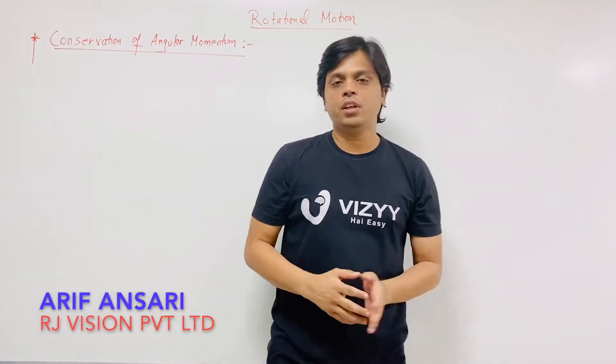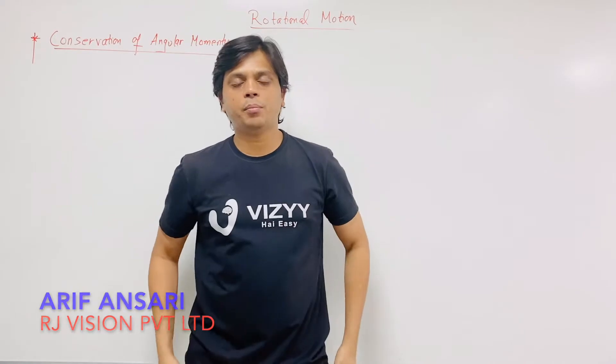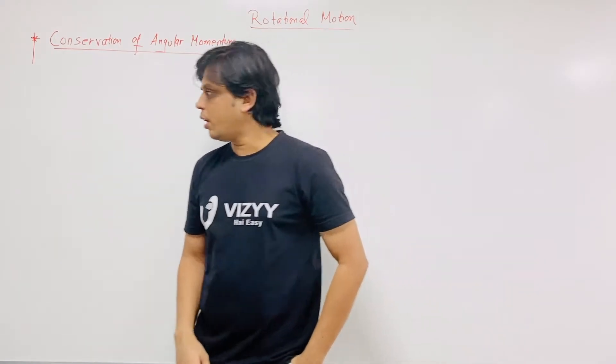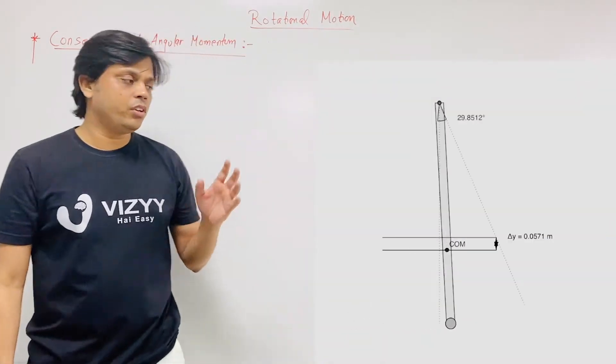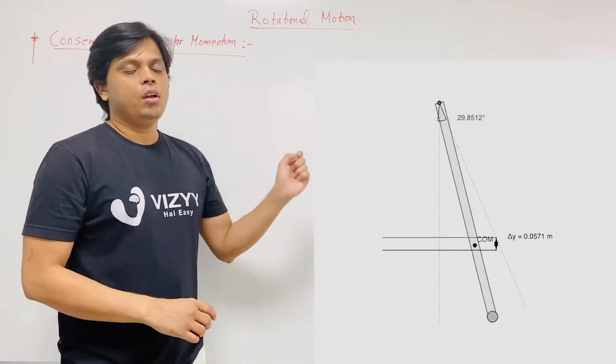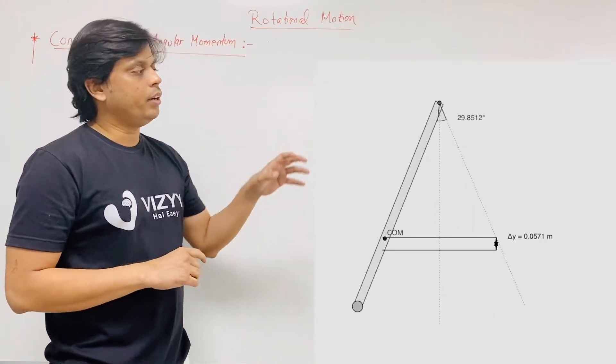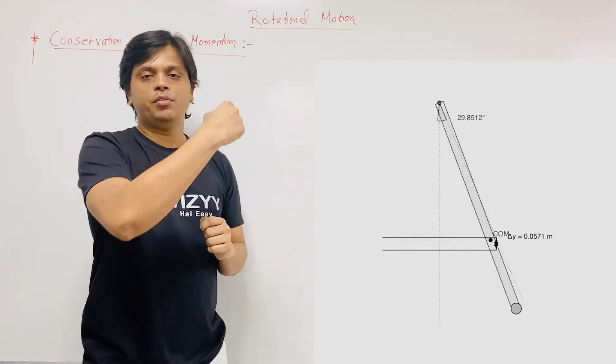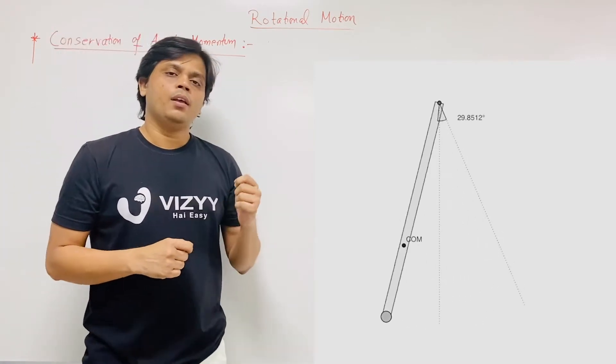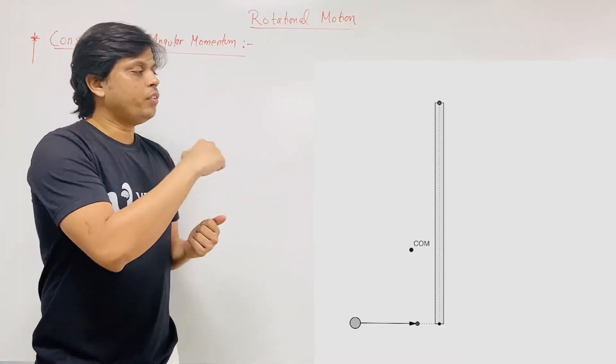Okay students, so we have seen an animation and then we have seen an example after that. How is this animation? Basically here there is one ball which is going to hit a rod and rod is attached at one end.